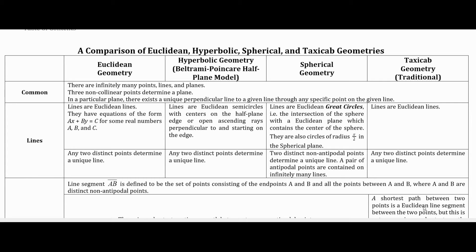Euclidean geometry is a familiar geometry that most of us know about — it's been around for many centuries. For hyperbolic geometry, we're going to be using the Beltrami-Poincaré half-plane model introduced in earlier videos. We've also introduced some GeoGebra and linear sphere models for spherical geometry, and traditional taxicab geometry is what we're going to be looking at as well. There are other variations and representations, but these are the versions we'll be using in this presentation.